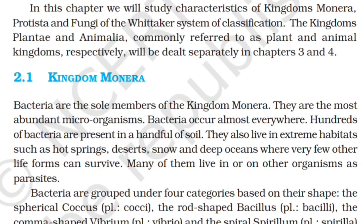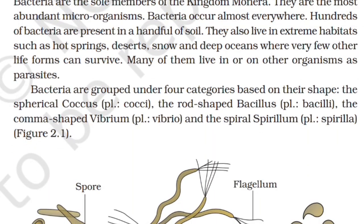2.1 Kingdom Monera. Bacteria are the sole members of the kingdom Monera. They are the most abundant microorganisms and occur almost everywhere — hundreds of bacteria are present in a handful of soil. They also live in extreme habitats such as hot springs, deserts, snow, and deep oceans where very few other life forms can survive. Many live in or on other organisms as parasites. Bacteria are grouped into four categories based on shape: the spherical coccus, the rod-shaped bacillus, the comma-shaped vibrio, and the spiral-shaped spirillum.